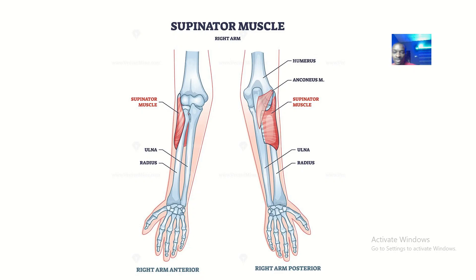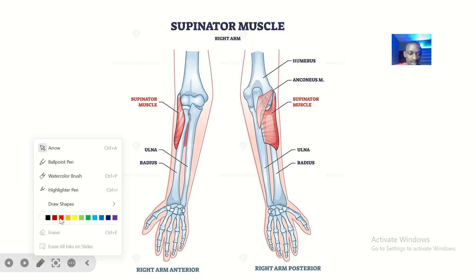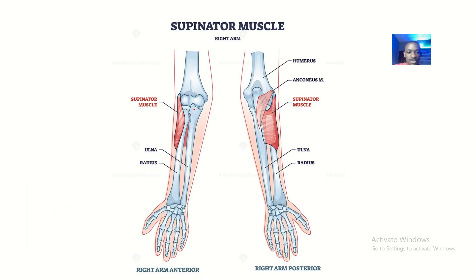On our screen you can see the supinator muscle. If asked to explain it from the image, you can see the ulna on the medial side and the radius on the lateral side. From the image, it is attaching to the back of the ulna and moves anteriorly to wrap around the radius.